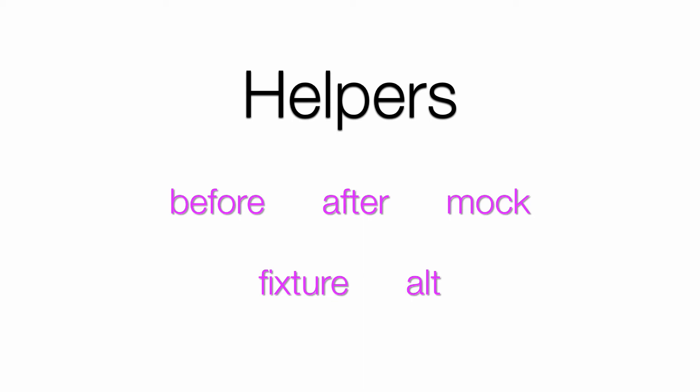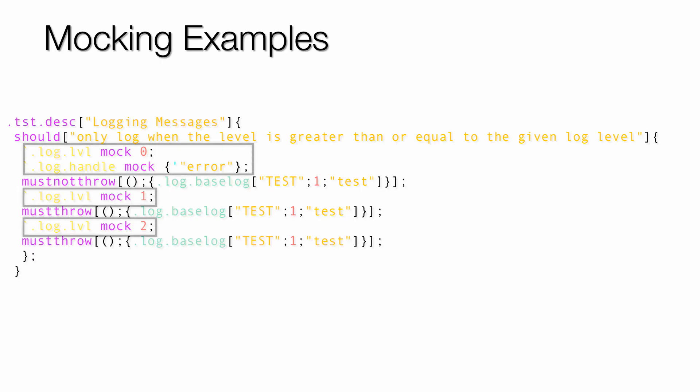There are also a couple of helper functions. Before and After make setup and teardown easier. Alt allows for different setup and teardown contexts. Mock lets us swap variables and functions out easily. And Fixture makes it simple to prepare and use a test data set within individual tests. The mock statement is a convenient way of changing the state of any global variable in the program. It fully respects the namespace context the test was defined in and will create a variable if one does not exist.